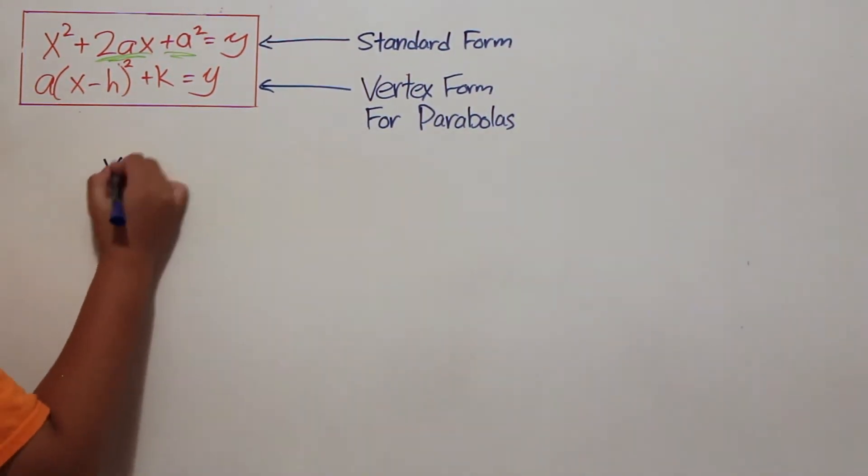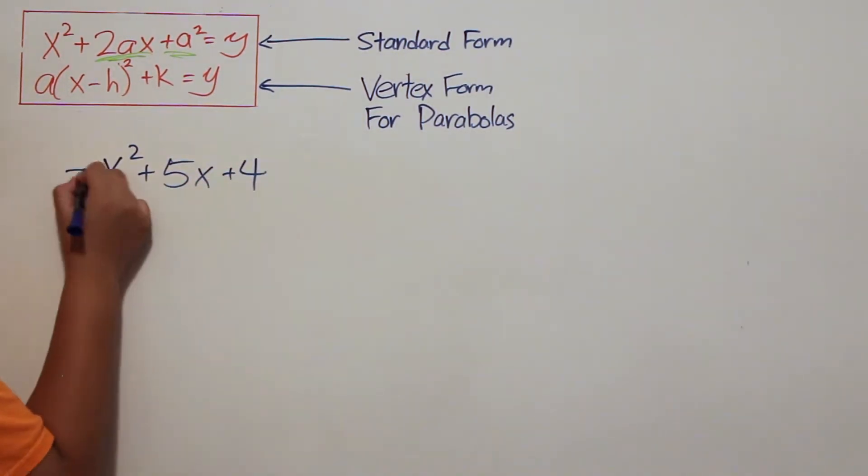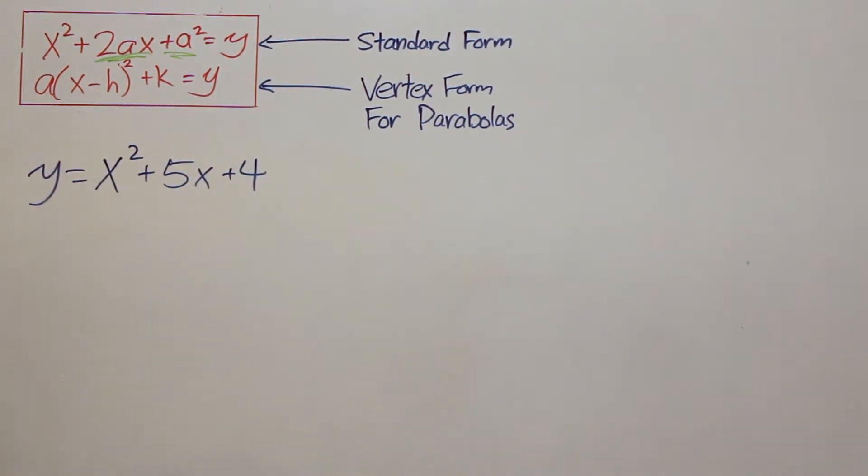Our next example, we have x squared plus 5x plus 4 equal to y. 5 is not a perfect square number, so we use the standard form and make 2a equal to 5.